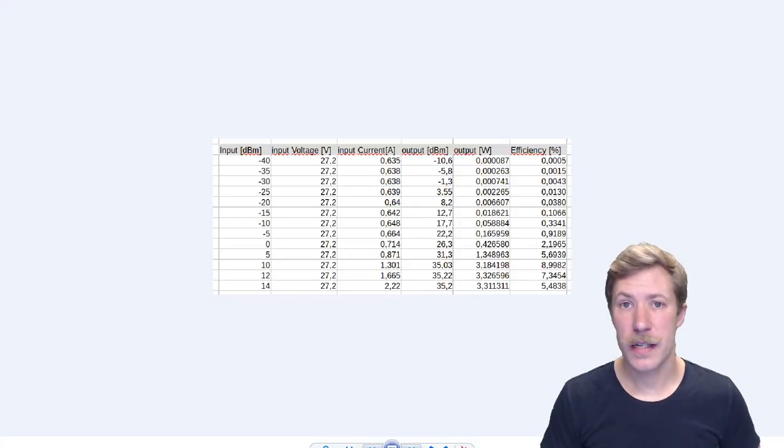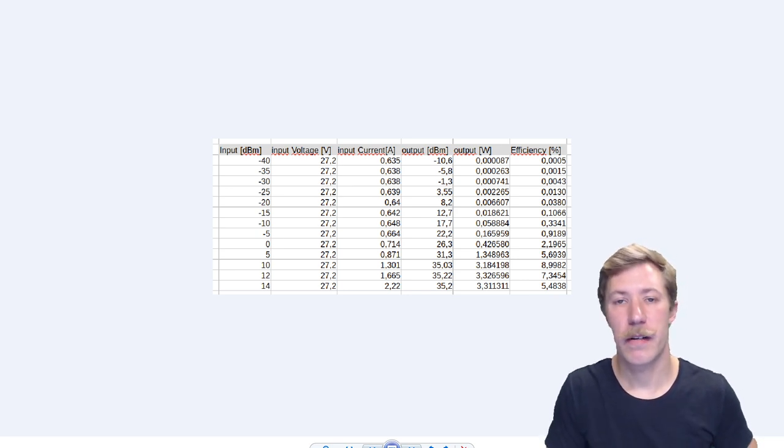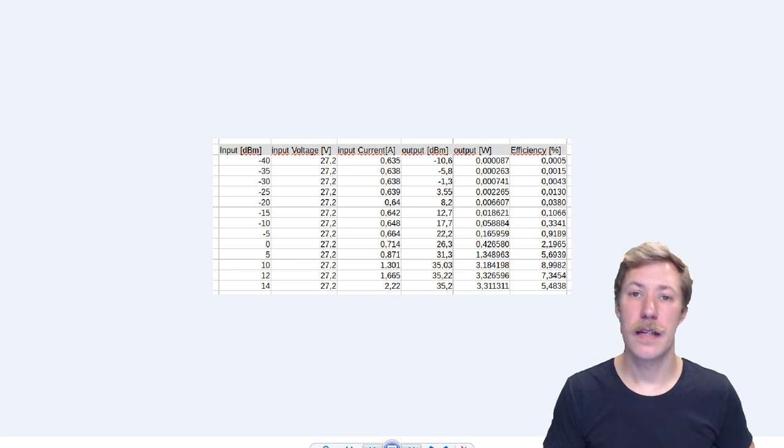He recorded the same S21 power gain amplifier measurements as he did with the complete power amplifier and as we can see here he measured from minus 40 dB to 14 and the efficiency is way lower than the large output transistors can do. But he could push this up to an output power of 5 watt which is unfortunately not recorded in this table.